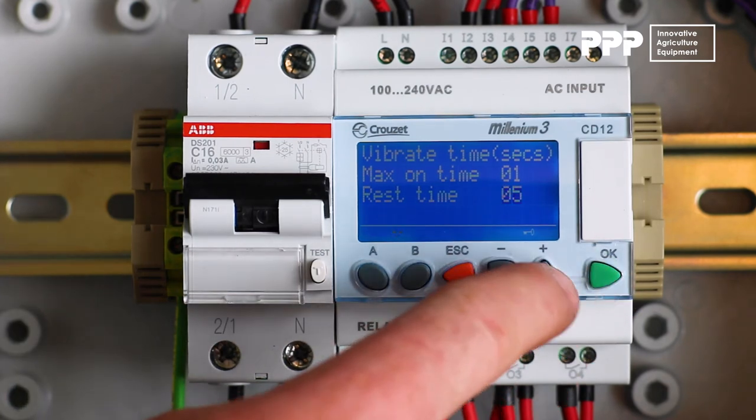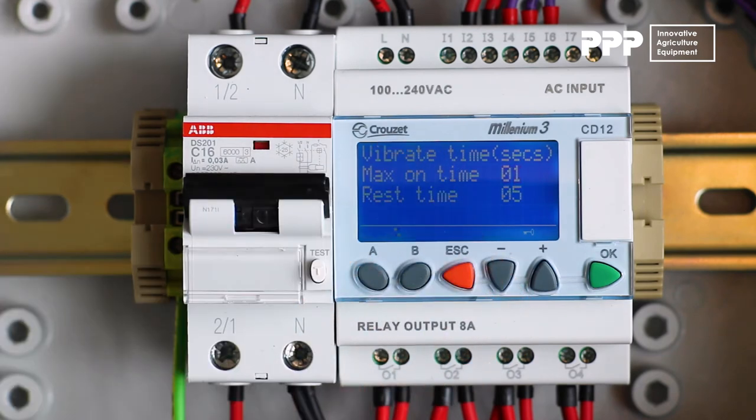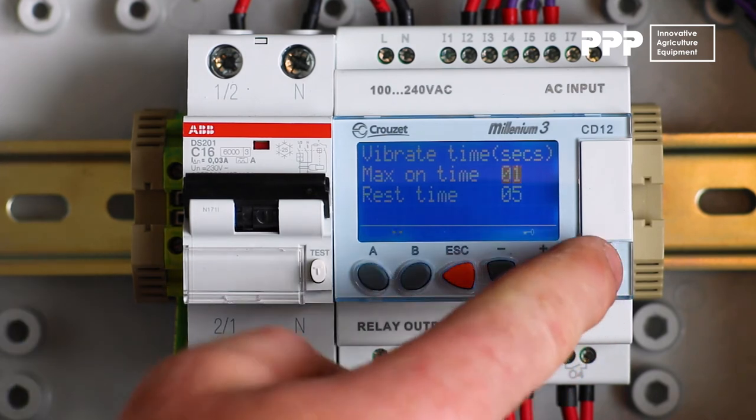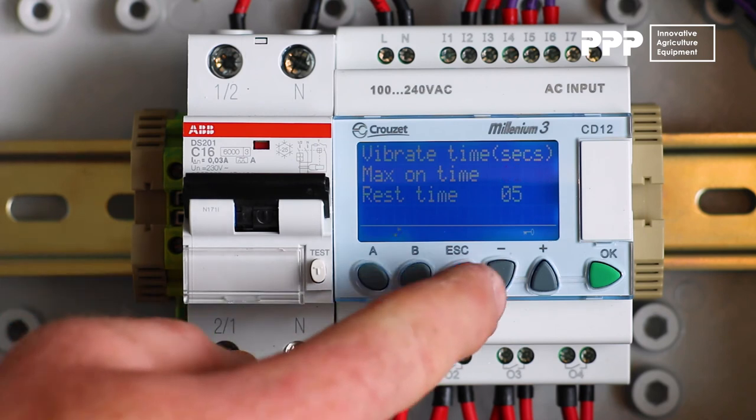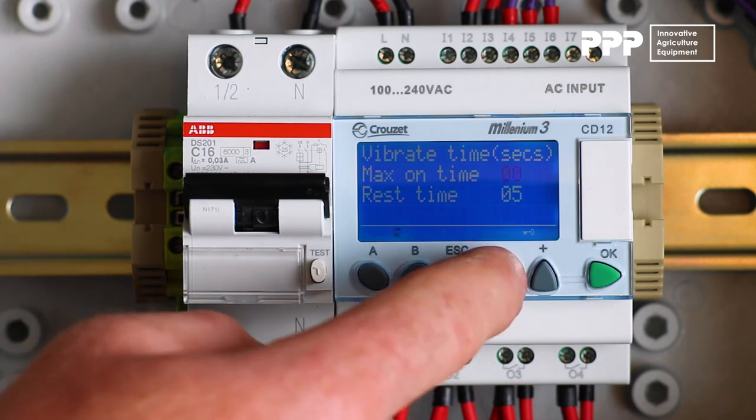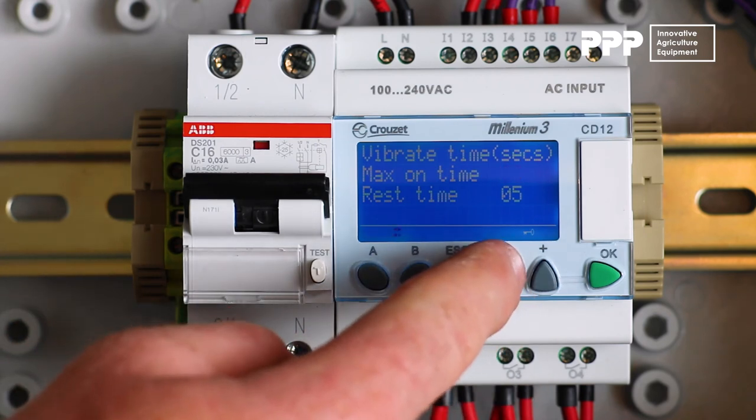I will now use the plus and minus buttons to navigate up or down to the max on time which is currently set to one second. To change that I need to push ok again so that it flashes on and off fully. Once it's fully flashing on and off I can navigate through the seconds to find my desired time.